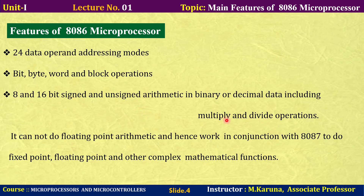That is the speciality of the 8086 processor. However, this processor cannot perform operations on floating point data. To perform floating point operations, the processor must work in conjunction with the 8087 co-processor. The 8087 is a math co-processor that can be connected to the 8086 processor.